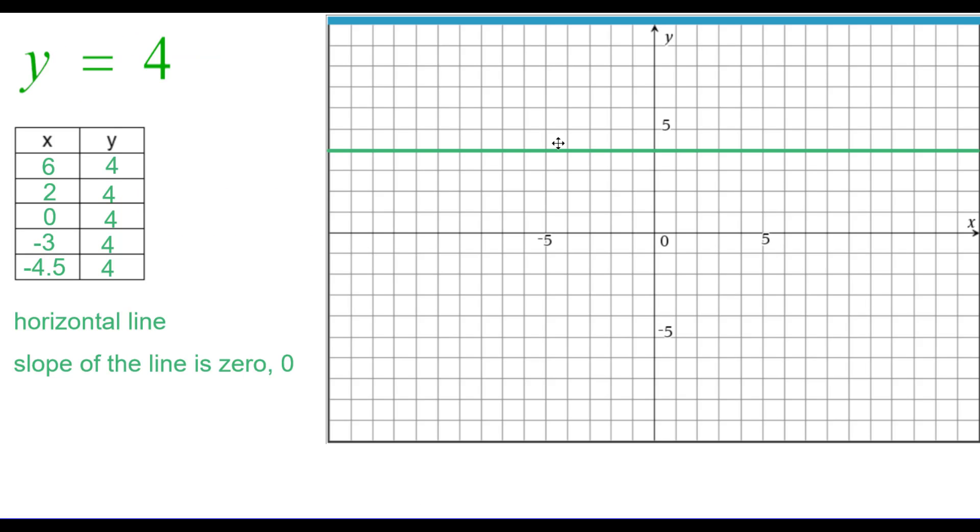And so it is a horizontal line. The slope of this line is 0. And these are some of the ordered pairs that are on this line. And you can see that the y-coordinate is always 4.